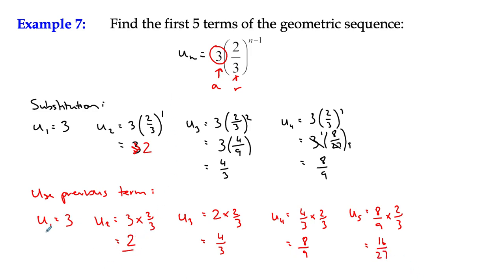We wouldn't normally leave them kind of stranded like that. We can write them down nice and neatly. First five terms is three, two, four thirds, eight ninths, and 16 over 27.